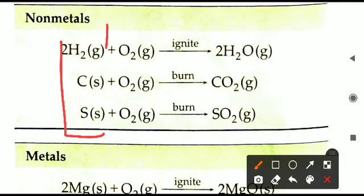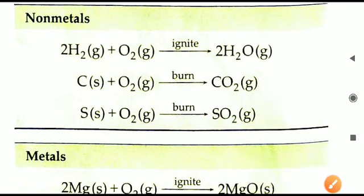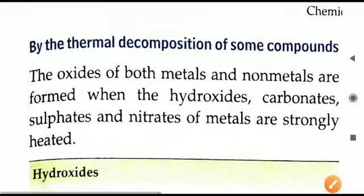First, we will see the non-metals — hydrogen, carbon, and sulfur. Whenever they are burned, they combine with oxygen and produce various oxides. Hydrogen forms water H2O, whose chemical name is dihydrogen oxide. Carbon forms carbon dioxide, and sulfur forms sulfur dioxide. For metals like magnesium and calcium, when these are also burned, they produce magnesium oxide and calcium oxide respectively.